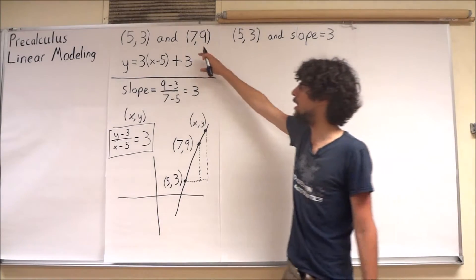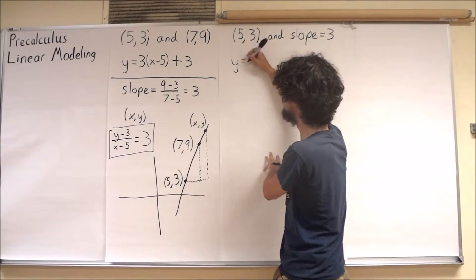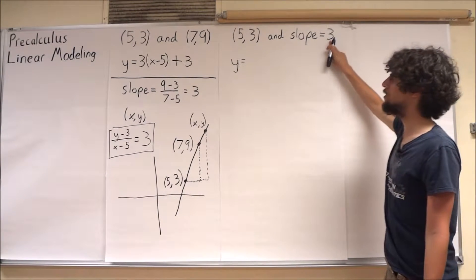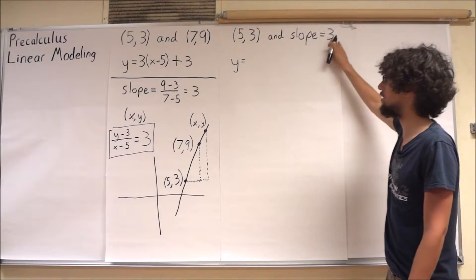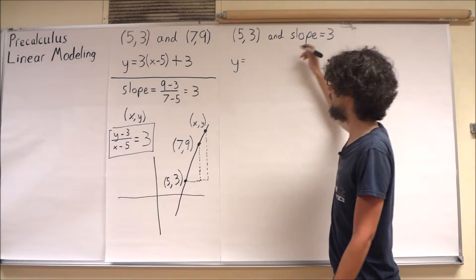Well, let's first do it a little bit more in this vein. I know that I'm going to have some sort of 3 multiplied by some sort of x because I do have this slope of 3.